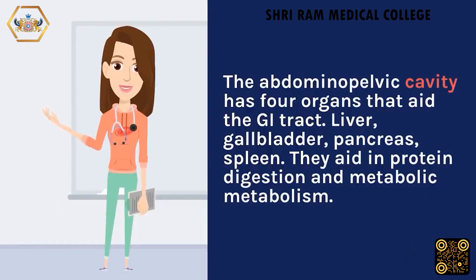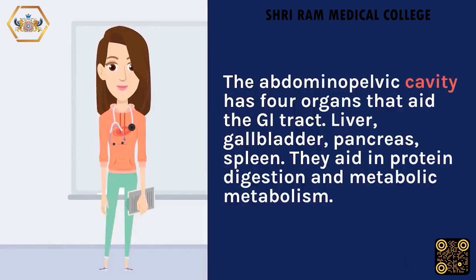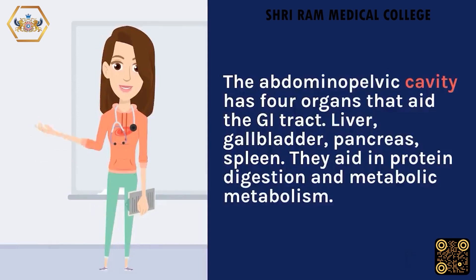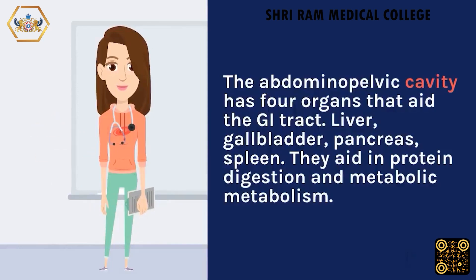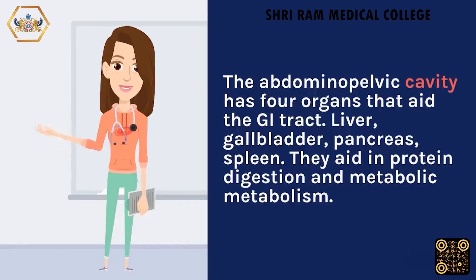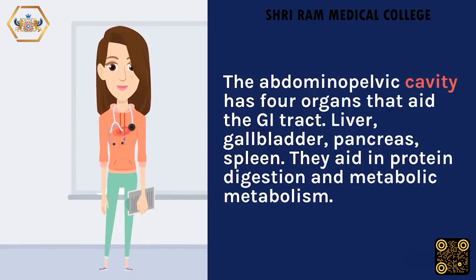The abdomen and pelvic cavity has four organs that aid the GI tract: the liver, gallbladder, pancreas, and spleen. They aid in protein digestion and metabolism.